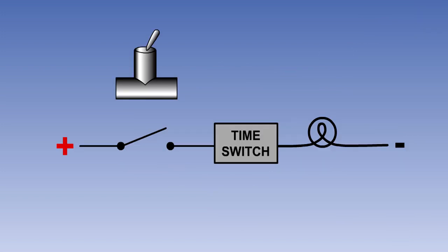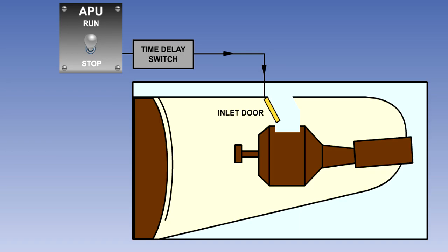Time switches, or relays, can be initiated electrically or mechanically to activate a circuit after a specific time interval has occurred. A time switch is often found in an aircraft's auxiliary power unit, where it will close the air intake door after a specific time delay after the auxiliary power unit has been shut down.